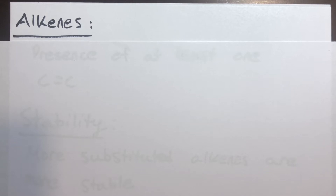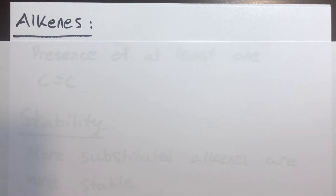In this video, we will look at alkenes — specifically ranking the stability of alkenes and determining E and Z nomenclature and cis and trans nomenclature for particular alkenes.